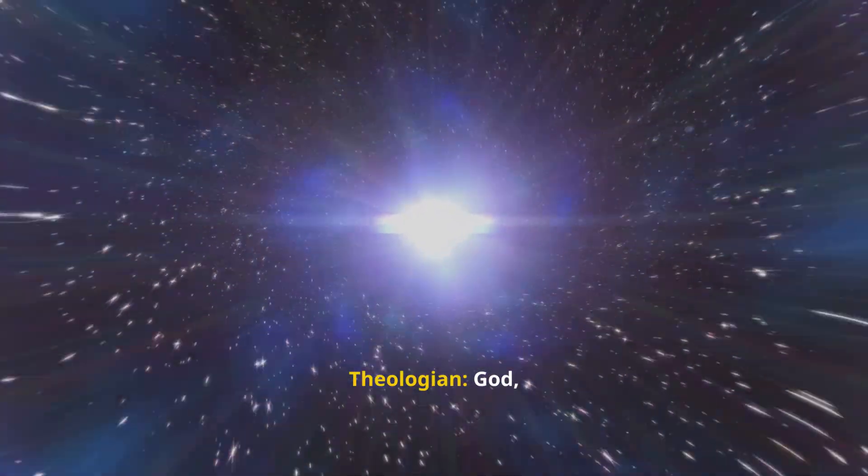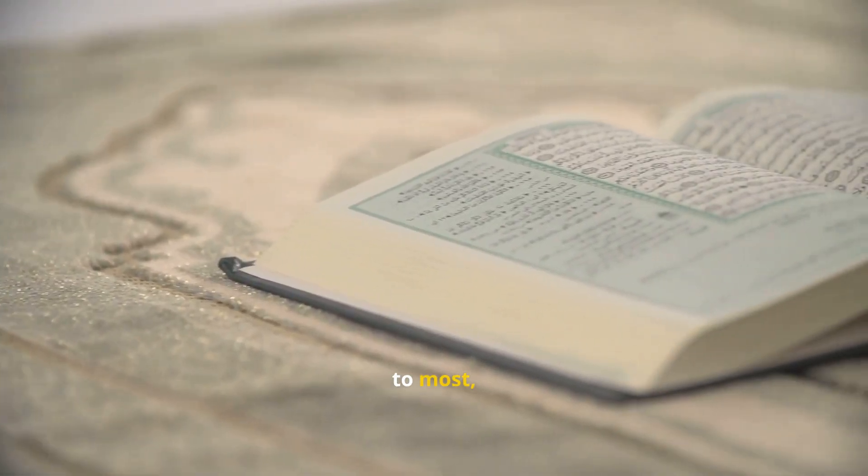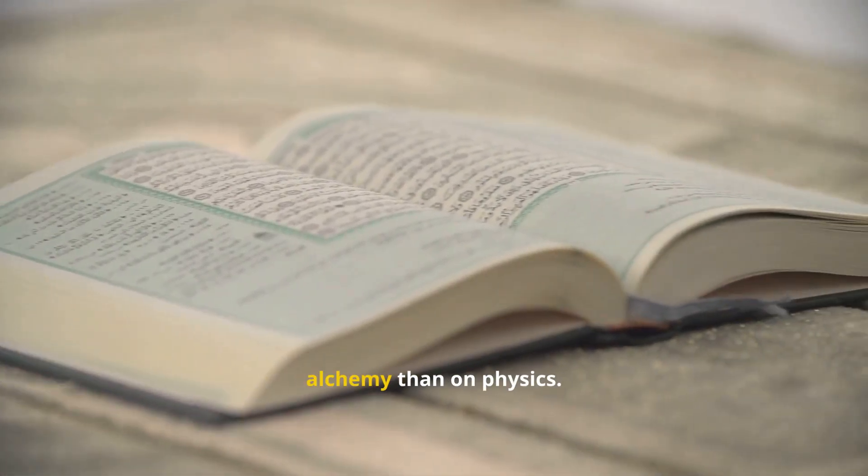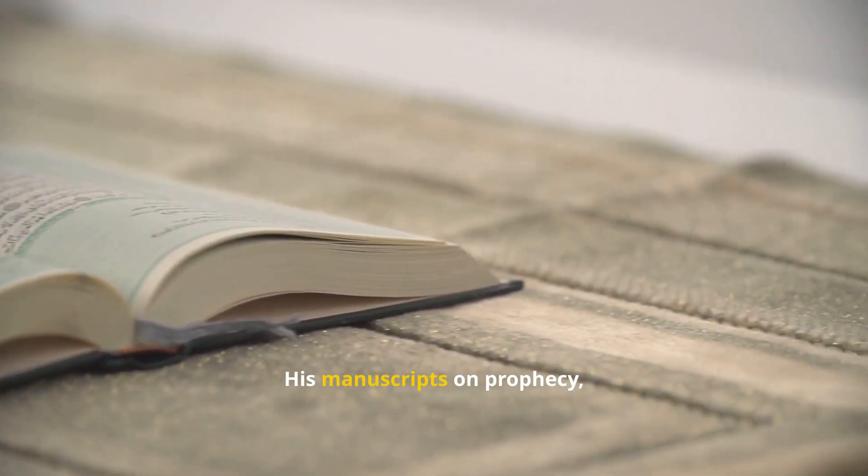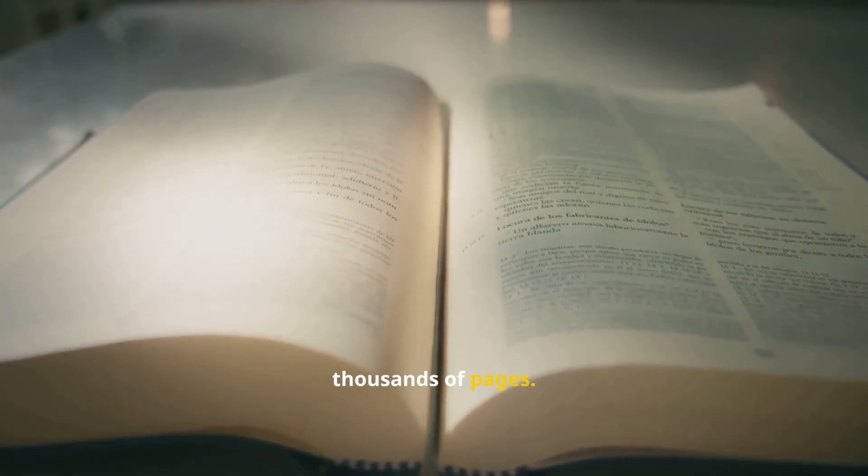The secret theologian: God, Scripture, and the hidden code of creation. Unknown to most, Newton wrote more on theology and alchemy than on physics. His manuscripts on prophecy, biblical chronology, and the hidden meanings of Scripture filled thousands of pages.